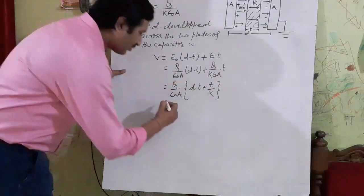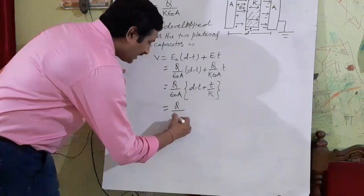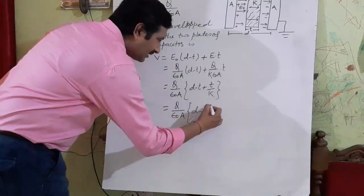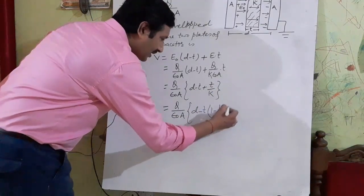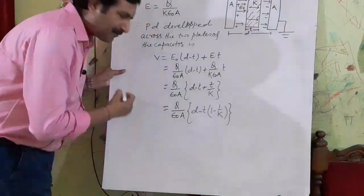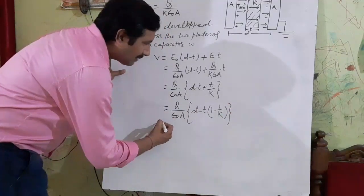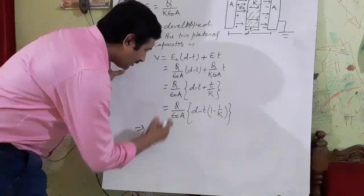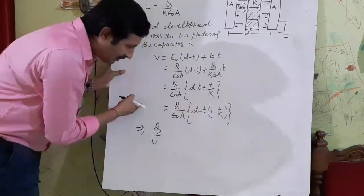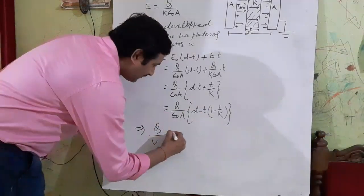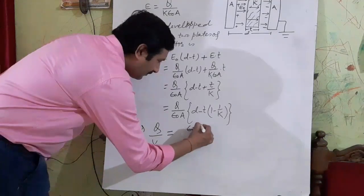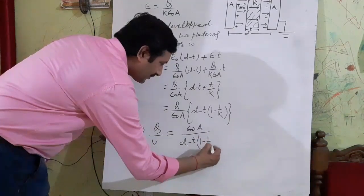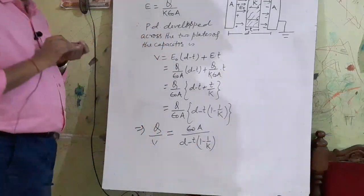Taking Q/(ε₀A) as common from both terms, we get V = Q/(ε₀A) × [D − T + T/K]. This can be rewritten as V = Q/(ε₀A) × [D − T(1 − 1/K)]. This expression equals Q/V, and rearranging gives Q/V = ε₀A / [D − T(1 − 1/K)].